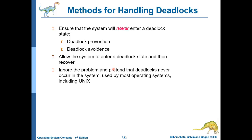We handle deadlocks using different methods. The first is deadlock prevention — ensuring the system never enters a deadlock state. The second is deadlock avoidance — letting the system approach but not enter a deadlock state. The third is to ignore the problem entirely and pretend deadlocks never occur. Most operating systems like Unix and Windows use the third option, meaning if a deadlock does occur, it becomes the user's problem to resolve.